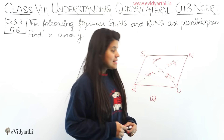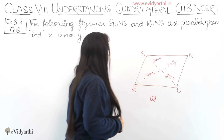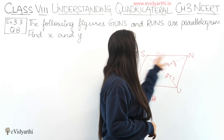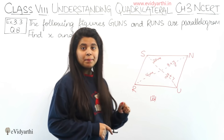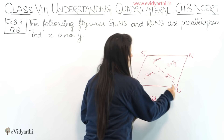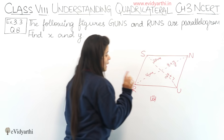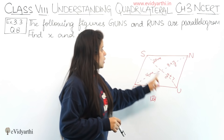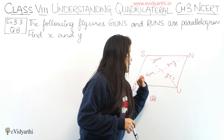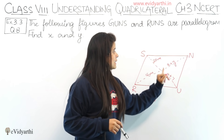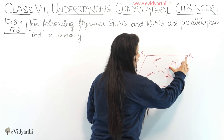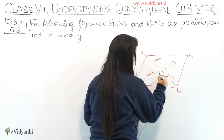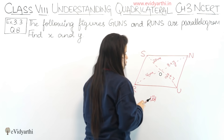Now coming to the second part. In the second part we have parallelogram RUNS. In this figure, two diagonals RN and US are given. Let's call the intersection point O. The lengths along the diagonals are given near that point.